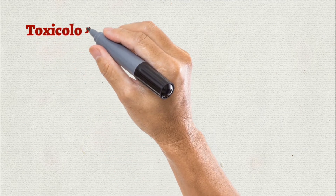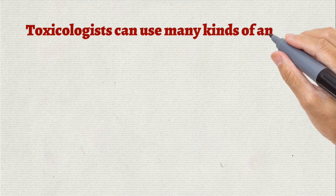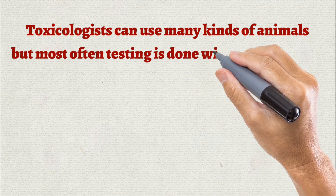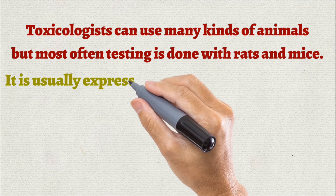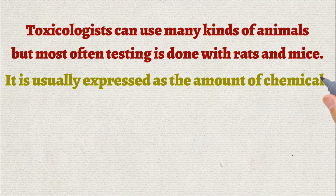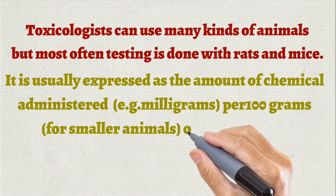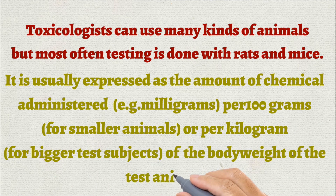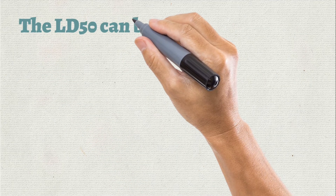Toxicologists can use many kinds of animals, but most often testing is done on rats and mice. LD50 is usually expressed as the amount of chemical administered per 100 grams or per kilogram of body weight of the test animals — 100 grams is for smaller animals and kilogram is for larger test subjects.